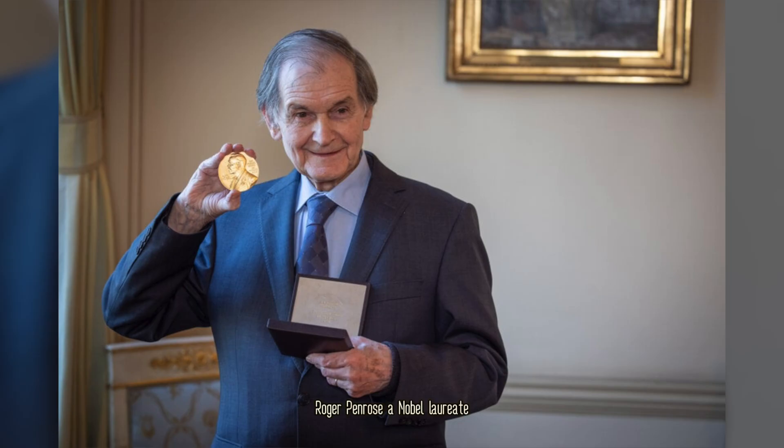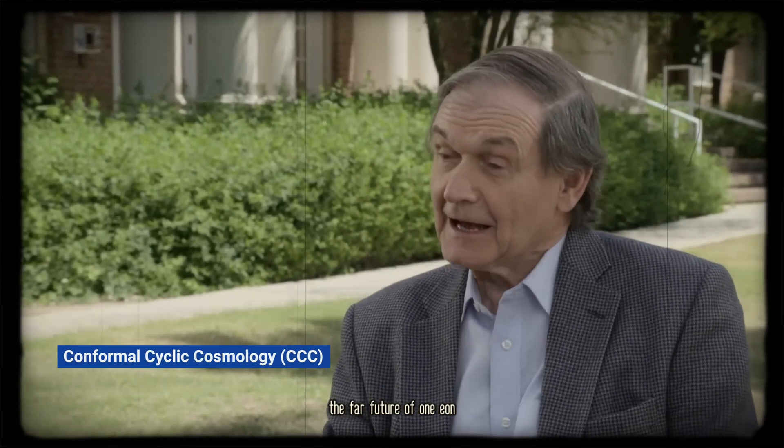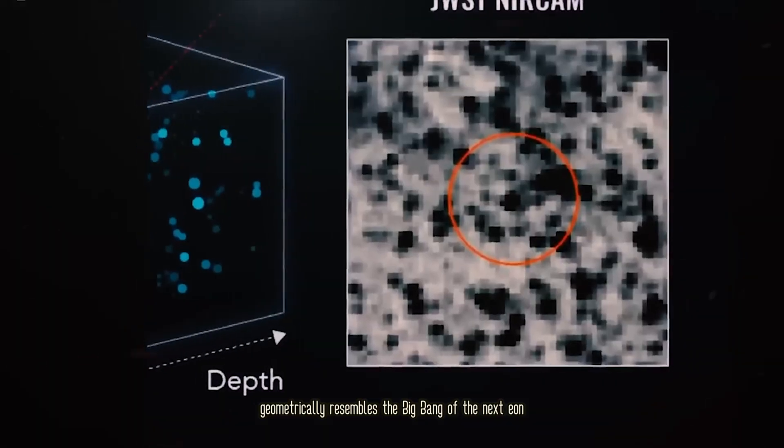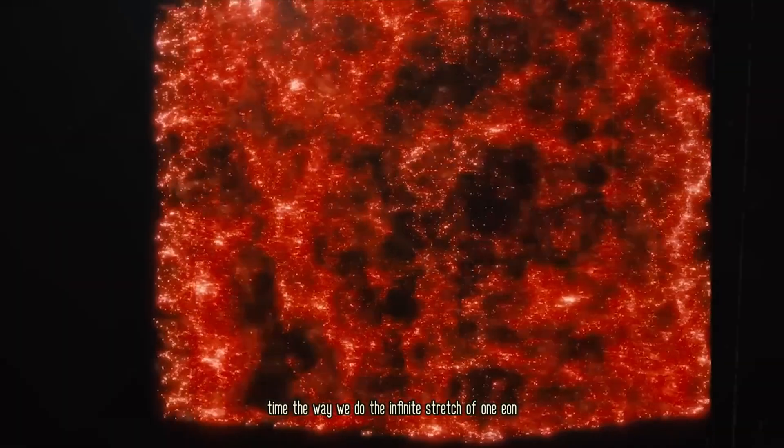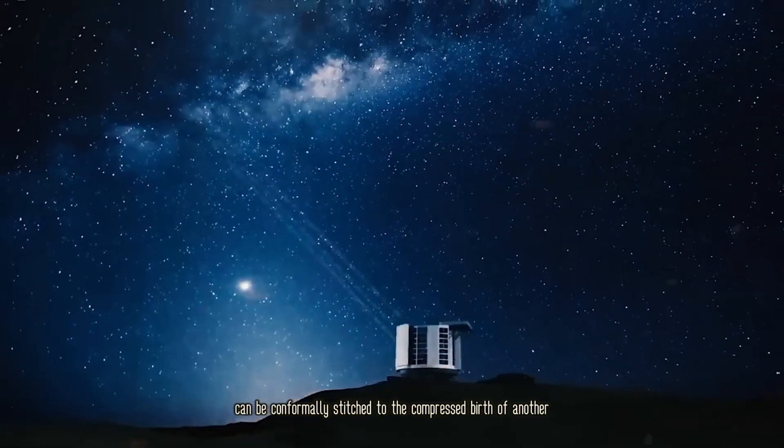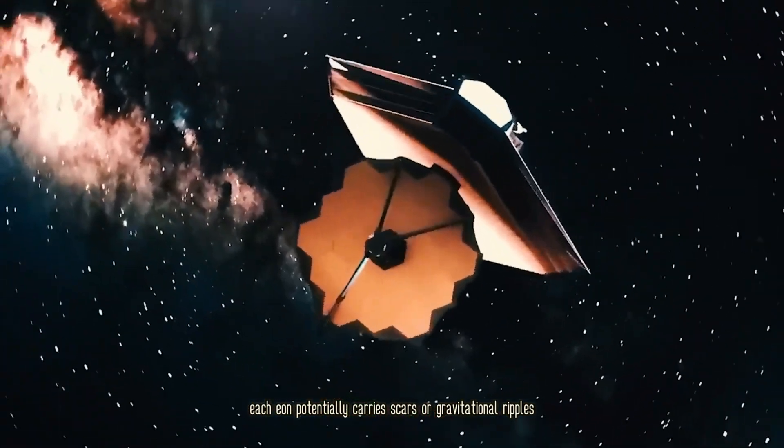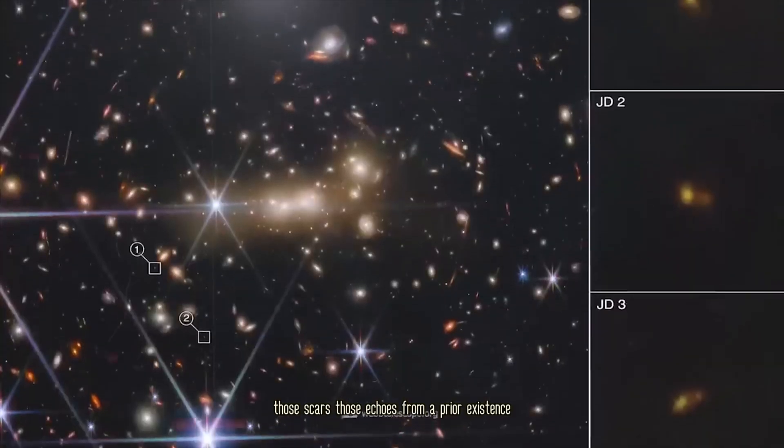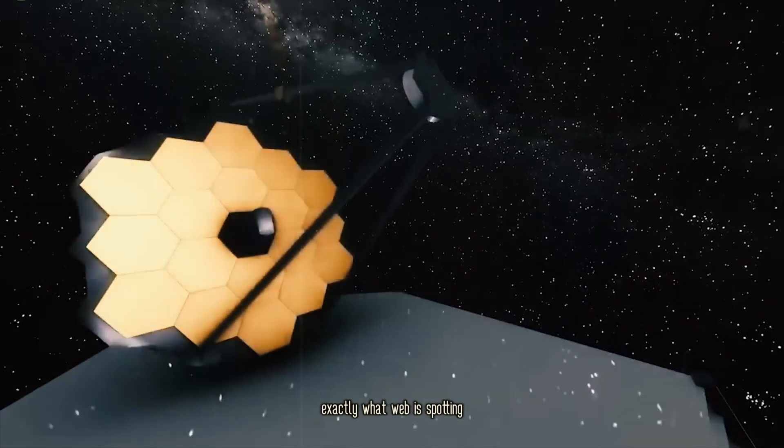Roger Penrose, a Nobel Laureate, tweaks the rules even further. In his Conformal Cyclic Cosmology, CCC, the far future of one eon, when all black holes have evaporated and only massless radiation remains, geometrically resembles the Big Bang of the next eon. Because massless particles do not experience time the way we do, the infinite stretch of one eon can be conformally stitched to the compressed birth of another. It's a mind-bending idea, creating an endless chain of universes. Each eon potentially carries scars or gravitational ripples, perhaps even information or imprints from its predecessor. Those scars, those echoes from a prior existence, might seed abnormally massive structures early on, exactly what Webb is spotting.